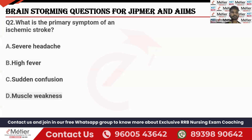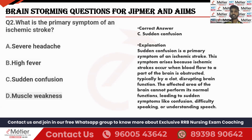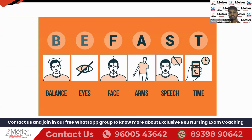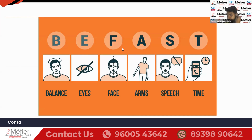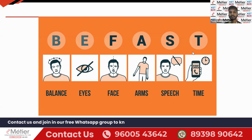Next question: What is the primary symptom of an ischemic stroke? Options: severe headache, fever, sudden confusion, muscle weakness. When a patient is having a sudden ischemic stroke, the answer is sudden confusion. Weakness will also be there, as well as slurring of speech. You all know the mnemonic BE-FAST.